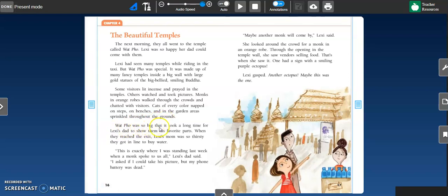Wat Pho was so big that it took a long time for Lexi's dad to show them his favorite parts. When they reached the exit, Lexi's mom was so thirsty, they got in line to buy water. This is exactly where I was standing last week when a monk spoke to us all, Lexi's dad said. I asked if I could take his picture, but my phone battery was dead. Maybe another monk will come by, Lexi said. She looked around the crowd for a monk in an orange robe. Through the opening in the temple wall, she saw vendors selling food. That's when she saw it. One had a sign with a smiling purple octopus. Lexi gasped. Another octopus! Maybe this was the one!